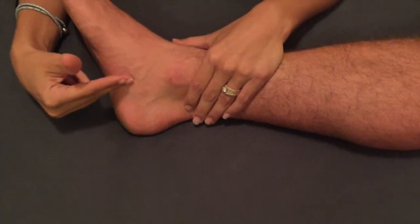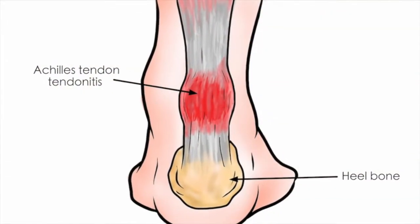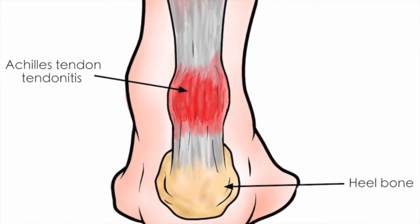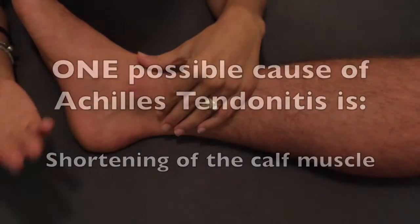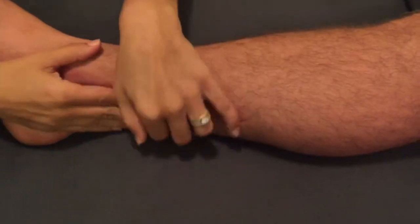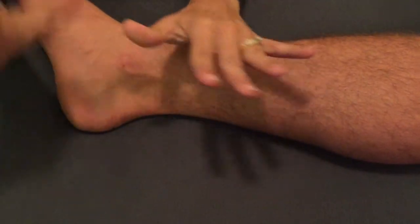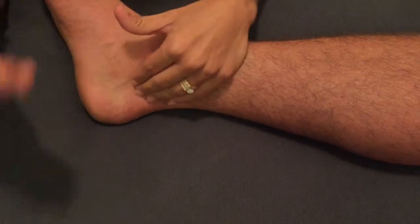If somebody is experiencing heel pain, one of the many reasons is due to Achilles tendonitis. A logical question to be asked is: if there is no actual trauma to this calf, and as human beings we walk equally right and left, why one side compared to the other side? Why pain just on the right and not on the left?